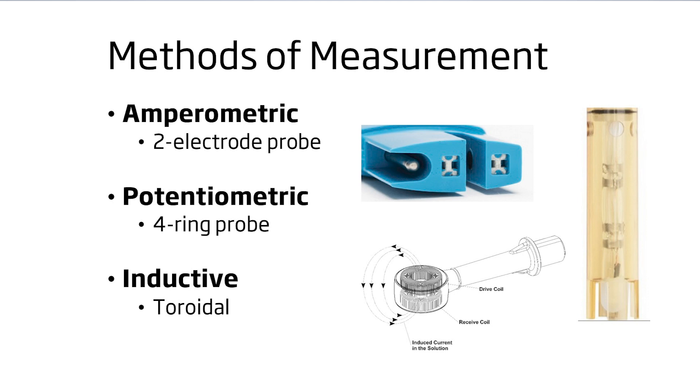Now that we've gone through some examples of why you would test conductivity, let's go over the types of probes. It's important to find a probe that fits your testing needs. There are three types of probes that we'll cover. These are two-electrode probes, also called amperometric probes, four-ring probes, also known as potentiometric probes, and toroidal, or inductive probes.